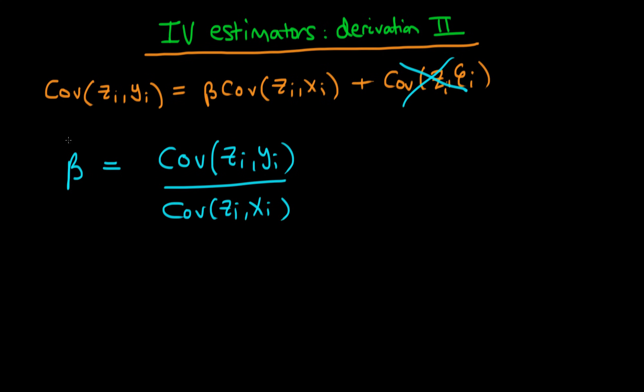And actually, as it turns out, this is the form of the IV estimator for the case of a bivariate model.